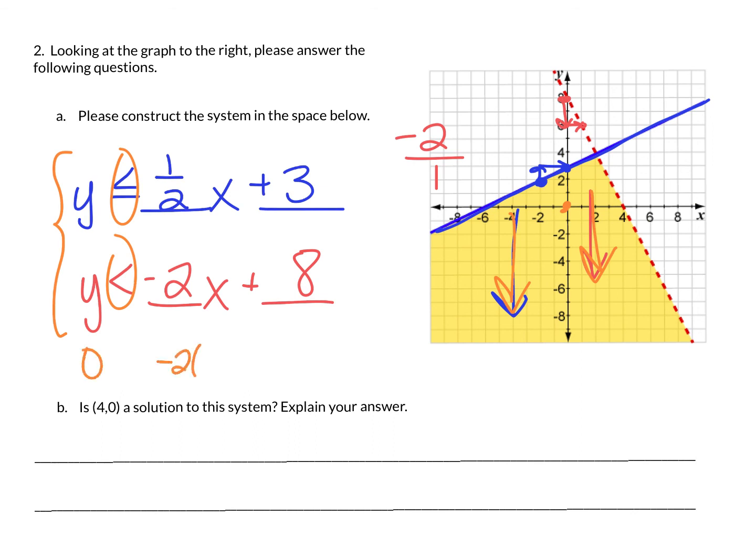0 negative 2 times 0 plus 8. So 0 versus 8, it's less. That's how I know it's less than. Also the shading is below or less than those y values. And last but not least, is 4, 0 a solution?